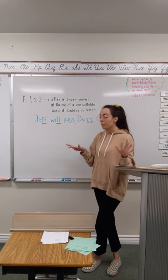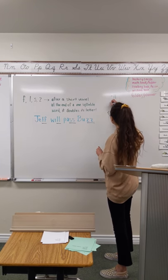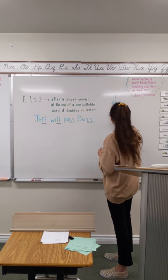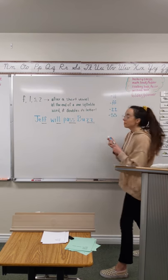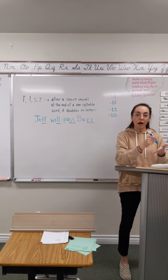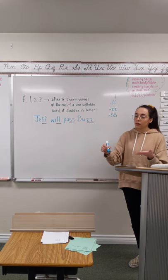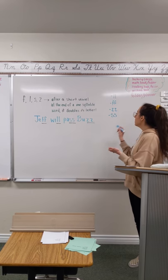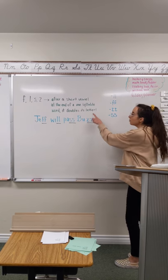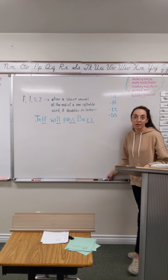So, what I want you to do is I want you to pause in just a minute and for the double L, the double F, the double Z, and the double S, I want you to commit those to memory using your whiteboard. So, that means you're going to go ahead and take your whiteboard and your whiteboard marker out. You're going to write dash S S, L L, F F, Z Z. They make the same sound as they normally would. And I want you to write down all of this on your piece of paper with Jeff will pass buzz, and then you can turn that in to me.